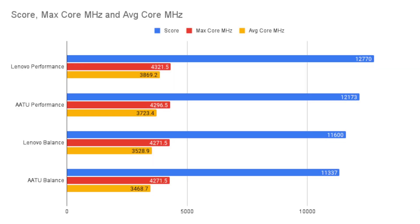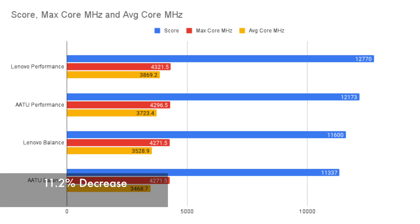Running Cinebench, these are the multi-score results I achieved. The Lenovo in Performance mode has the highest score with 12,770 points. From there, the score gradually decreases down to 11,337 using AATU Balanced mode. This comes to an 11.2% decrease.